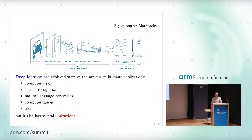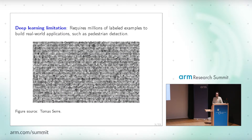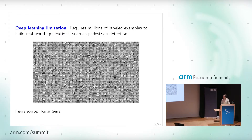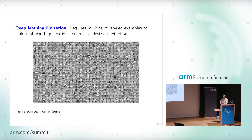We have seen that deep learning has become a very successful technology in recent years. It has achieved big achievements in different areas, such as computer vision, speech recognition, natural language processing, computer games, and so on. Despite these successes, deep learning still has some limitations which I'm going to focus on. The first one is that deep learning is a very data-hungry technology — it requires a lot of data to obtain accurate predictions in practice. For example, to build real-world applications, we may need a lot of labeled examples consisting of inputs and outputs to train these neural networks.